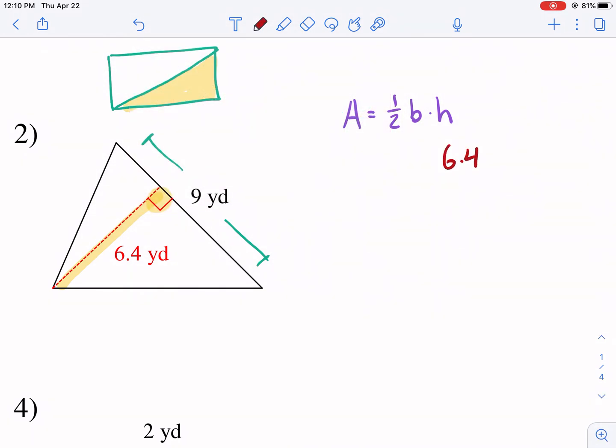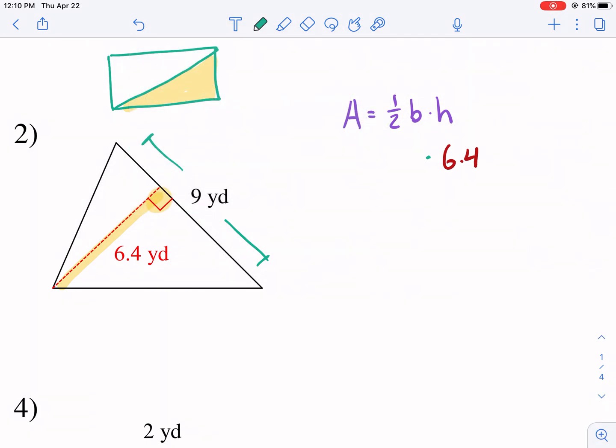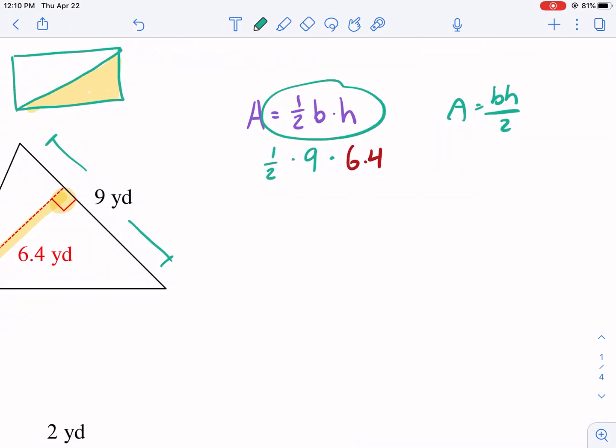So our height here, this one is specifically 6.4. They're not interchangeable. So 6.4 is our height. Our base is 9. So we multiply that by 9 and we multiply that by one half. Another way to write this is area equals base times height divided by 2. A lot of people like it like that. I prefer the one half, but it's up to you.